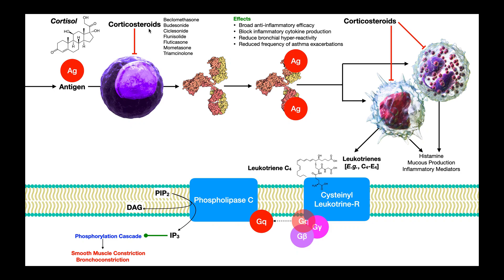Corticosteroids in general are broadly anti-inflammatory. They inhibit the function of all these immune cells — they inhibit plasma cells, eosinophils, and macrophages. By inhibiting these cells as a whole, they block inflammatory cytokine production and the production of histamine. Ultimately there's much less IP3 produced, which circumvents bronchoconstriction and helps keep the airways open, reducing bronchial hyperreactivity and the frequency of asthma exacerbations.